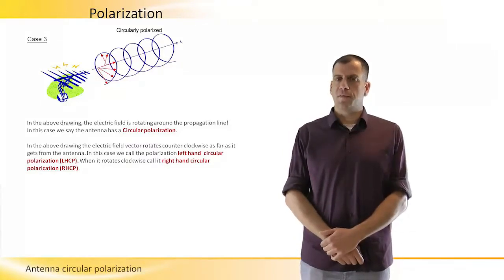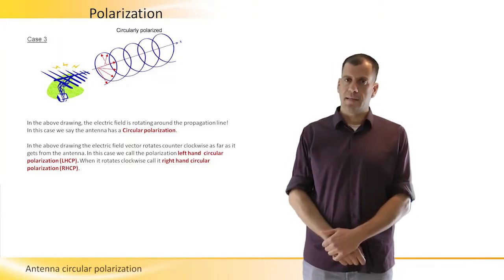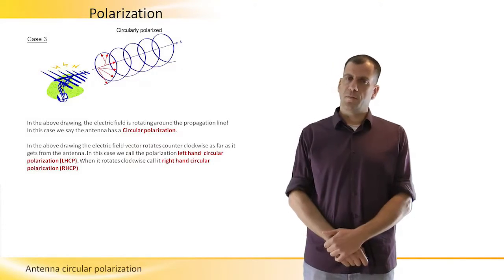If it is 90 degrees, then it will be left-hand circular polarization, and if it is minus 90 degrees, then it will be right-hand.